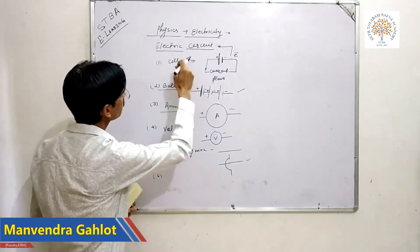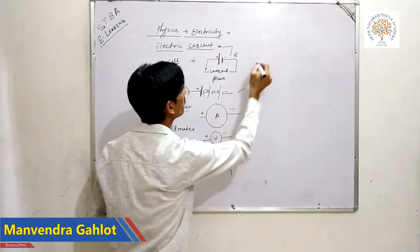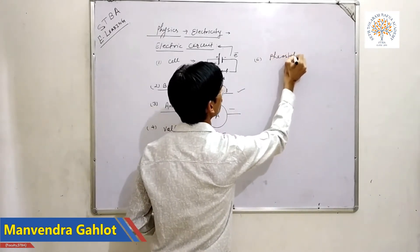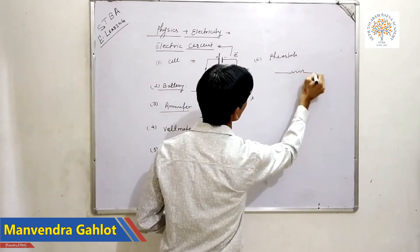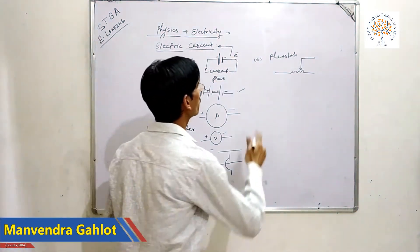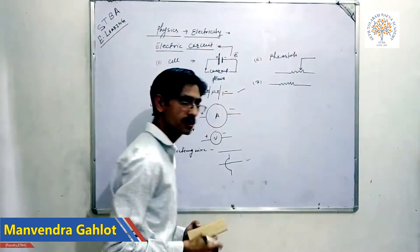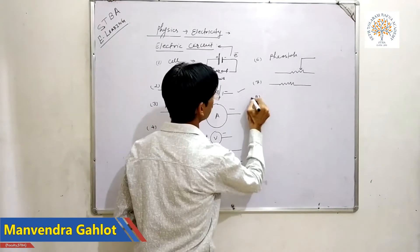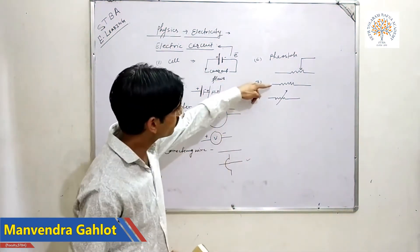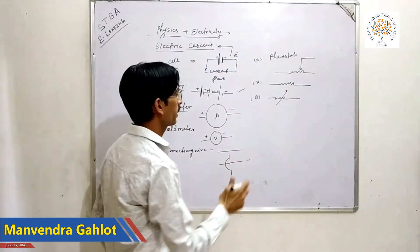Sixth: rheostat. A rheostat is an instrument which controls the amount of current. Seventh: resistance — this is the symbol for a resistor. Eighth: variable resistor — similar to a resistor but its value can be changed.